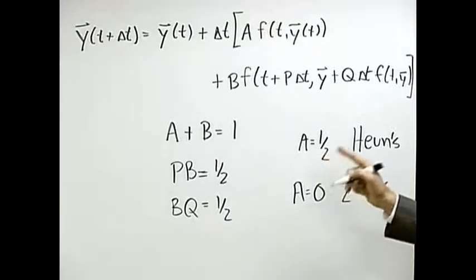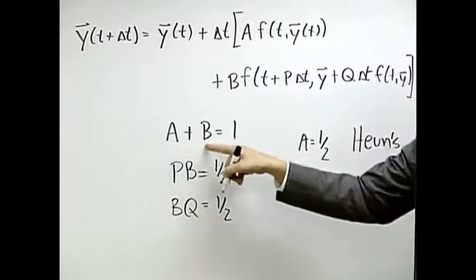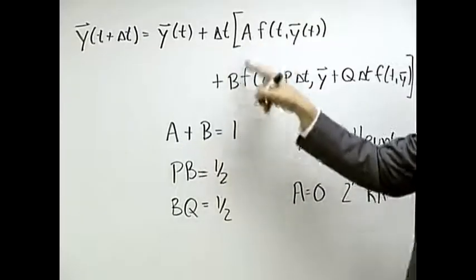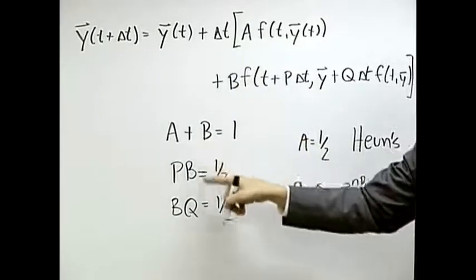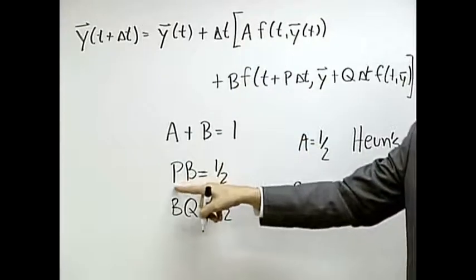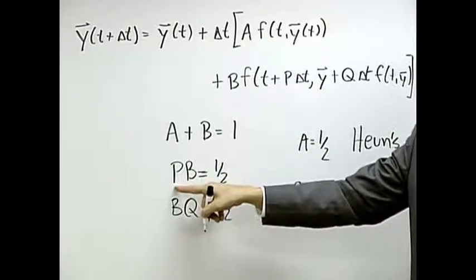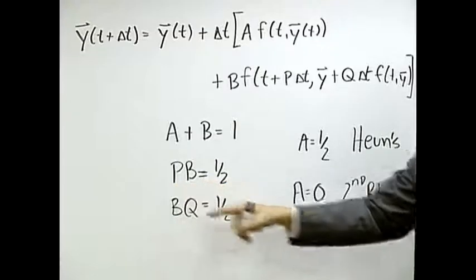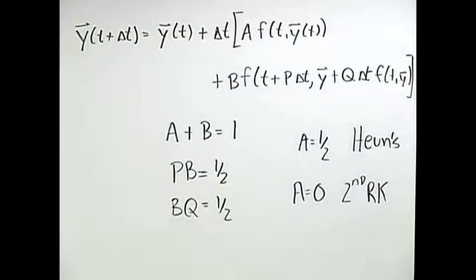So let's look at the difference here, what these things philosophically do. If you pick A to be half, then B is a half, they're weighted equally. And then if B is a half, P is one. Now, P tells me where I'm going to evaluate this. So what this method does is says let me take the slope here, weighted equally with the slope over there.